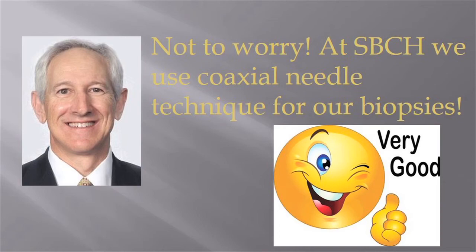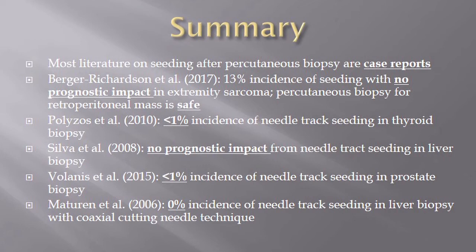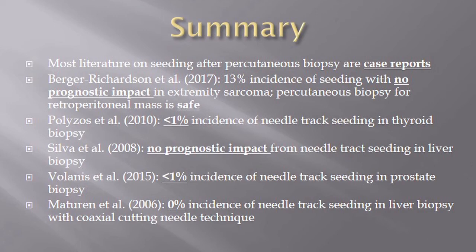To summarize everything we talked about: most of the literature is based on case reports, but these important meta-analysis studies showed an overall very low incidence of needle tract seeding, and most agreed there is no prognostic impact even when seeding did occur. Dr. Berger's 2017 study showed 13% seeding with extremity sarcomas with no prognostic impact, and retroperitoneal masses are safe to biopsy. Thyroid biopsies showed less than 1% seeding; in 2008 liver biopsies showed no prognostic impact; in 2015 prostate biopsies showed less than 1% seeding; and the coaxial cutting needle technique showed zero incidence of seeding.